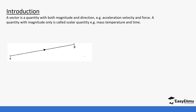First of all, a vector is a quantity with both magnitude and direction. When we talk about magnitude we are talking about distance, and direction. For example, we have acceleration, force, and velocity. A quantity with magnitude only is referred to as a scalar quantity, and examples are mass, temperature, and time.